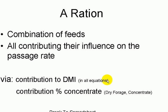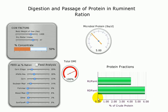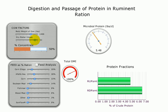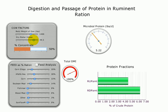A ration is a combination of feeds, all contributing in a way to influence the passage rate, and all contribute to the total passage of feeds. Here we're looking at a ration program where you can put in different feed amounts — 50% forage concentrate, 47 pounds of dry matter — and we're looking at the actual impact on microbial yield of protein. As we increase the passage rate, notice that the microbial protein is actually increasing.